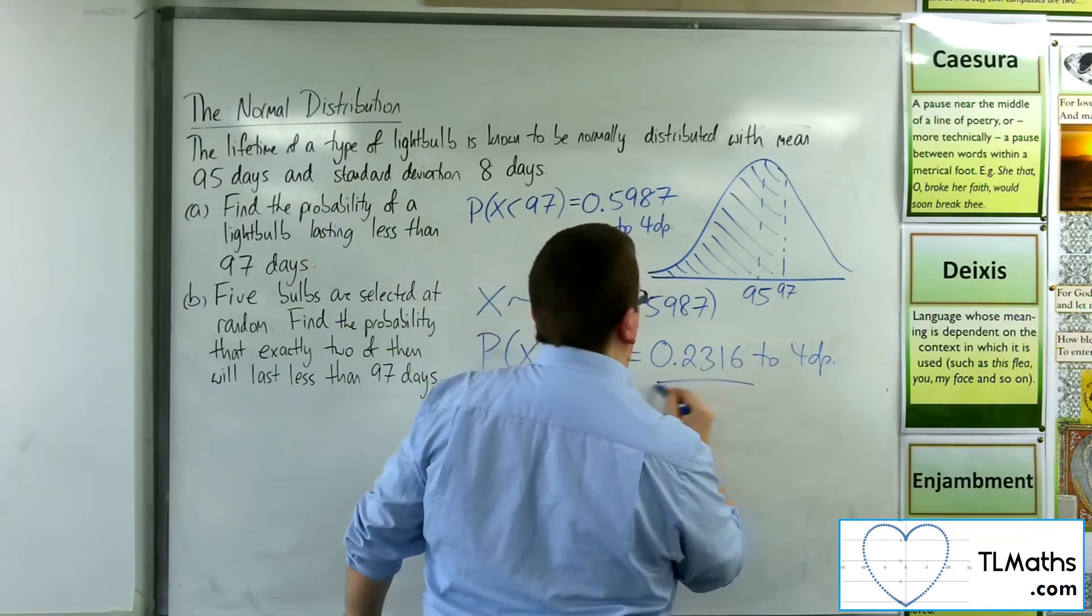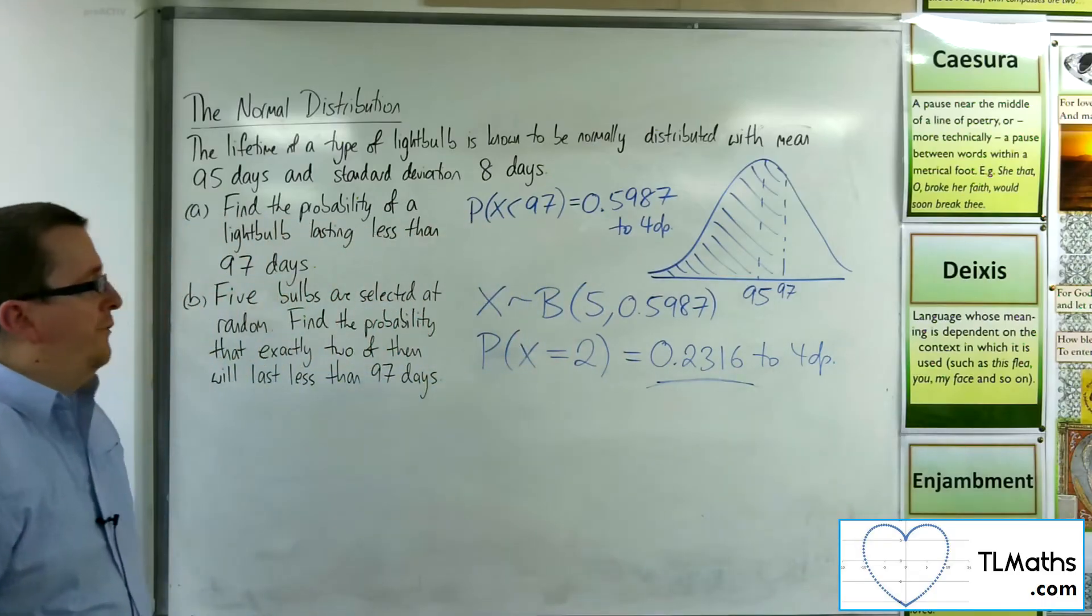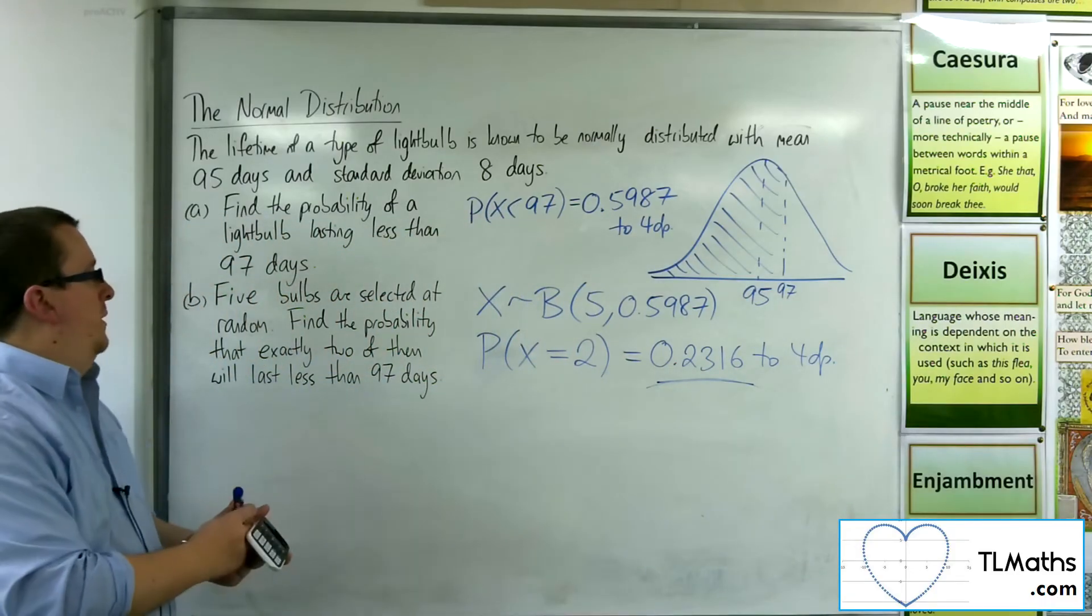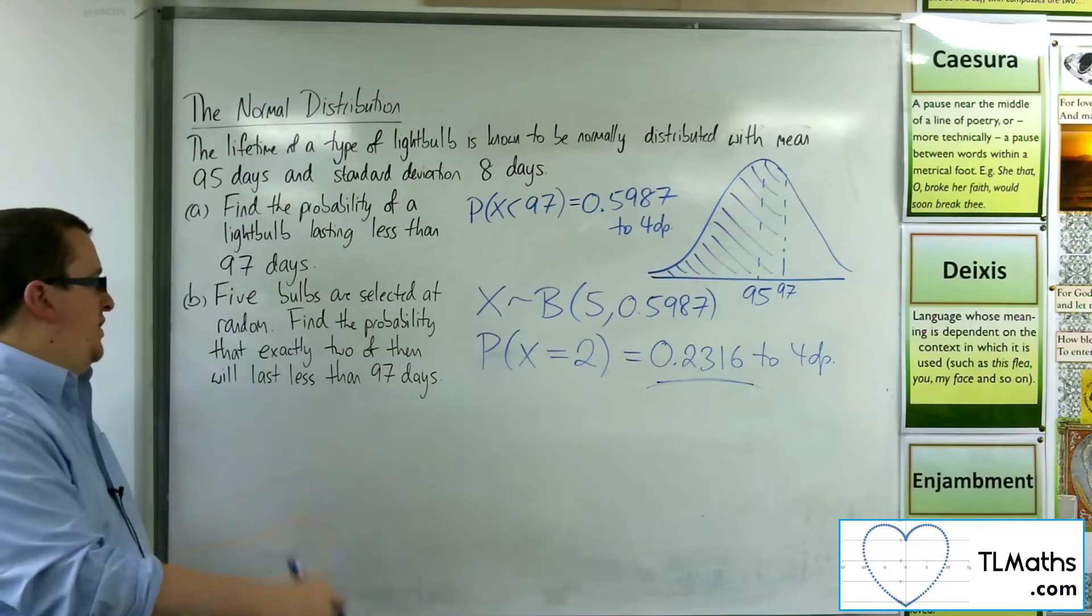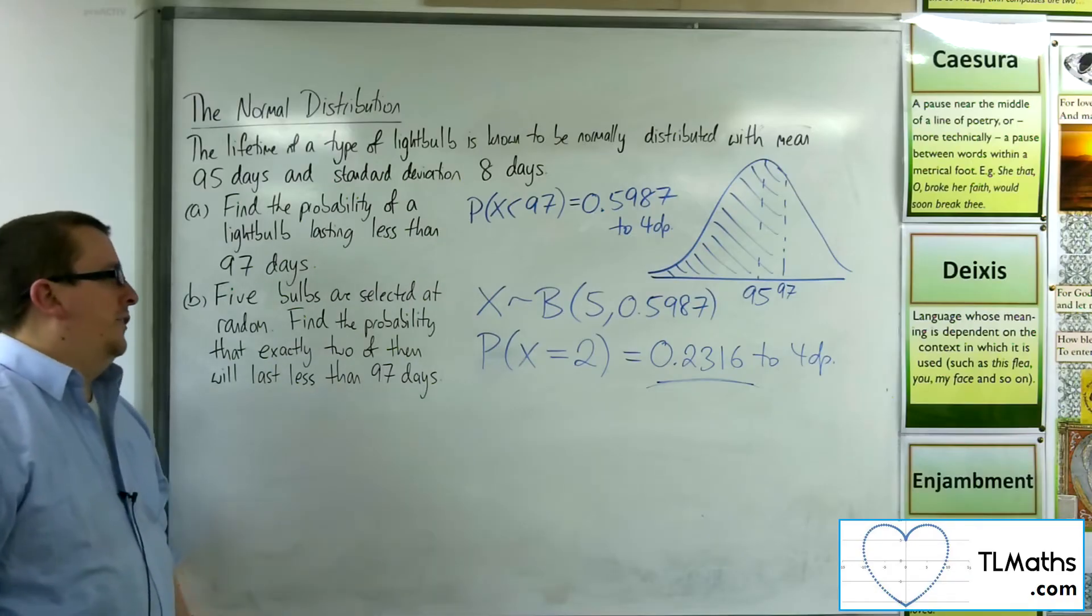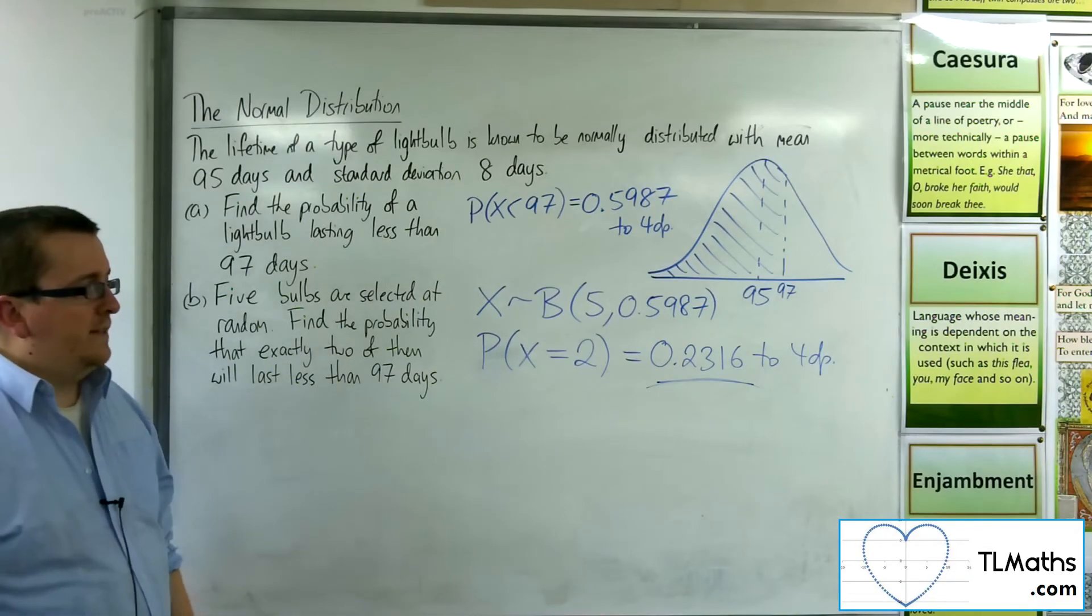So that is the probability of picking out five bulbs at random, and precisely two of them will last less than 97 days.